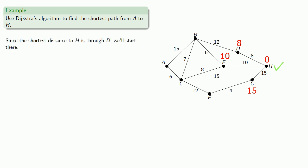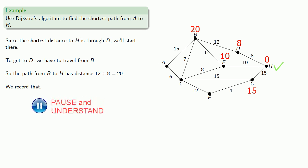Now we note that the shortest distance to H is through D, so we'll start there. To get to D, we have to travel from B. So the path from B to H has a distance of 12 plus 8 or 20, and we'll record that. Since all the edges to D have been considered, we can mark it as visited and ignore it hereafter.